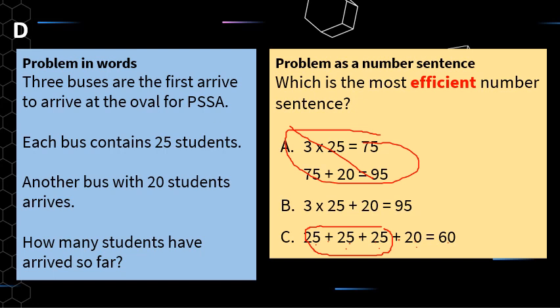Looking at B: 3 times 25 plus 20 equals 95. B is the most efficient number sentence — it only involves two operations: multiplication and addition. You might be wondering why I'm talking about this; these are all correct, and that's totally fine.